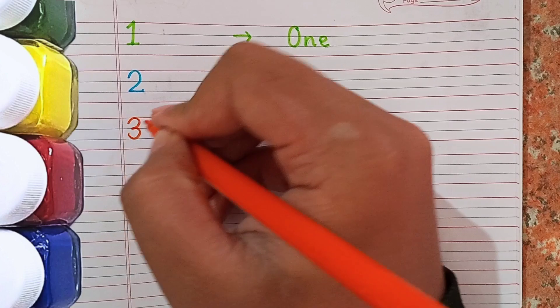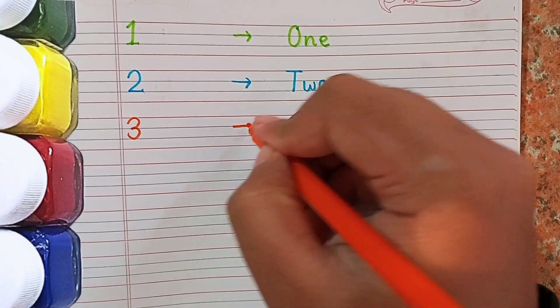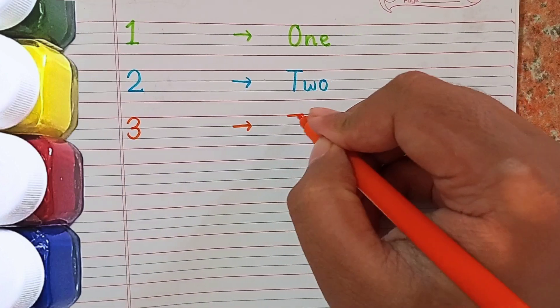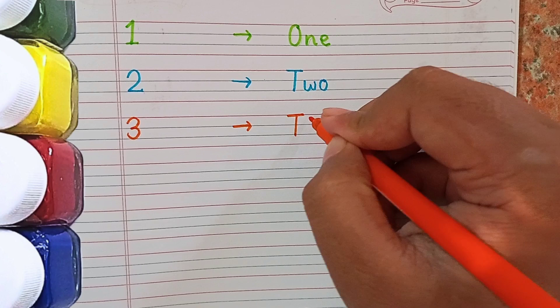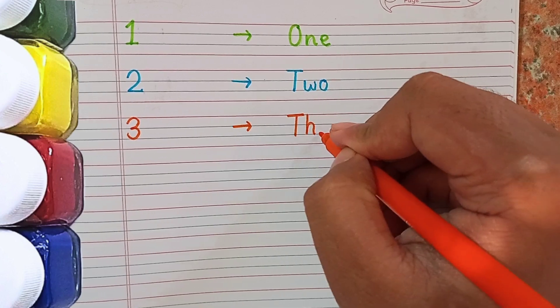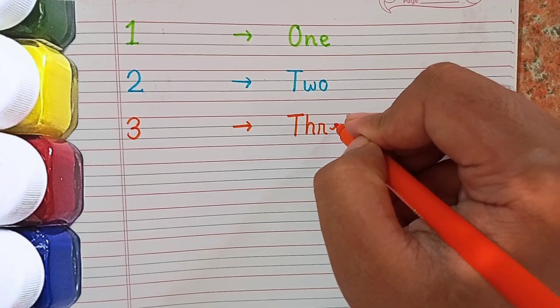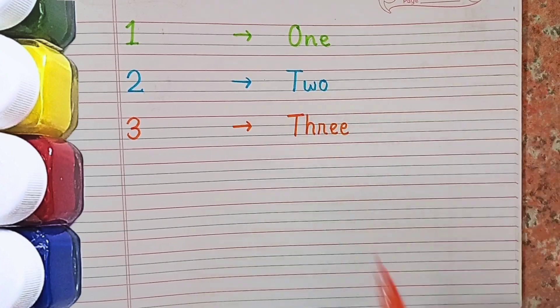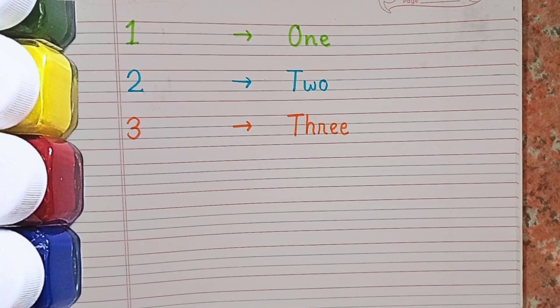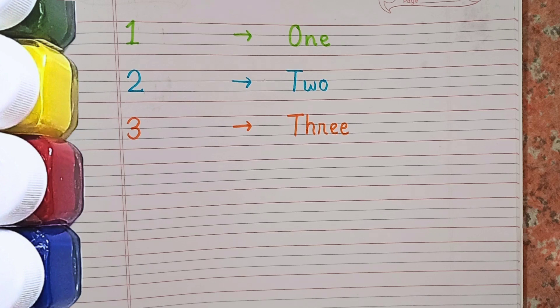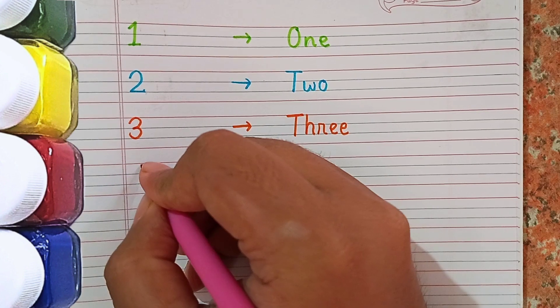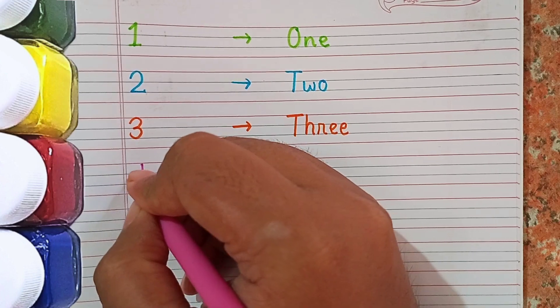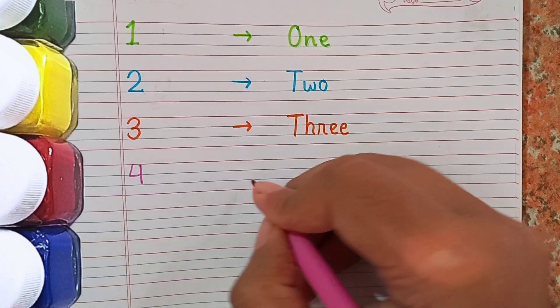After 2 I will write 3. This is 3 and the spelling of 3 is T-H-R-E-E. Again, repeat the spelling with me: T-H-R-E-E.